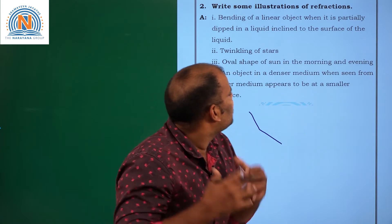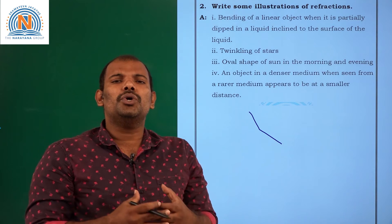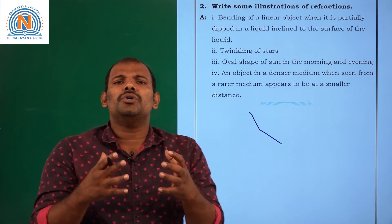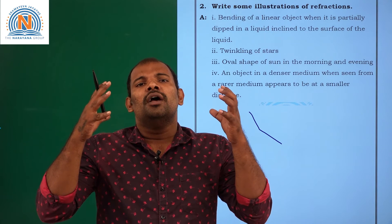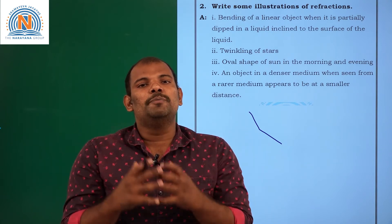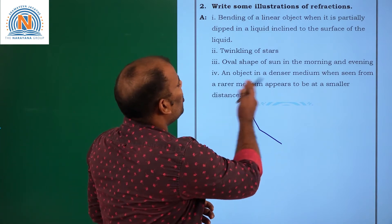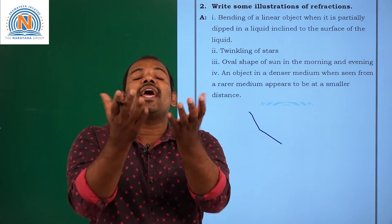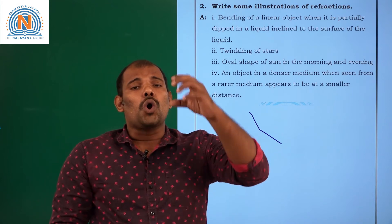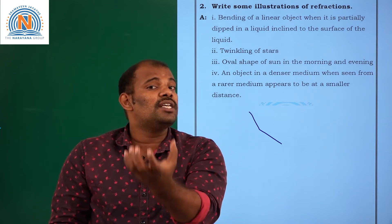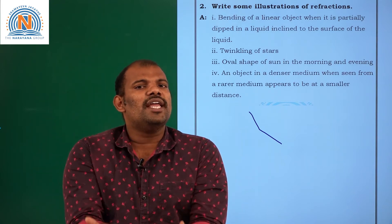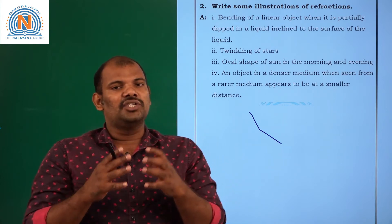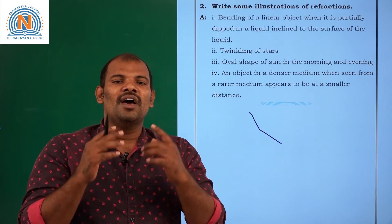Another example is the oval shape of the sun in the morning and evening, which is also due to refraction. Twinkling of stars is due to atmospheric refraction — because of the varying densities in the atmosphere, you are able to see twinkling. Also, an object in a denser medium, when seen from a rarer medium, appears to be raised. For example, a coin placed at the bottom of a vessel filled with water appears raised — that is also due to refraction, as the light ray travels from a denser medium to a rarer medium.